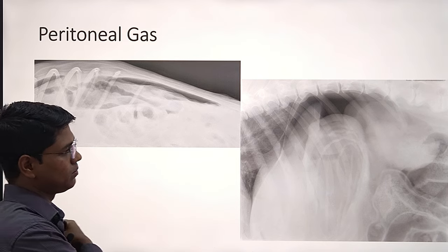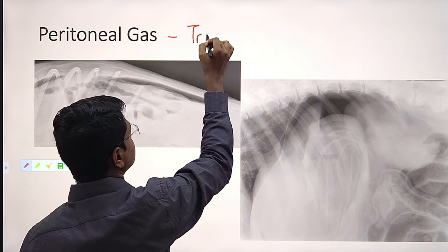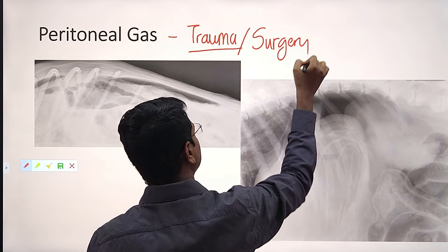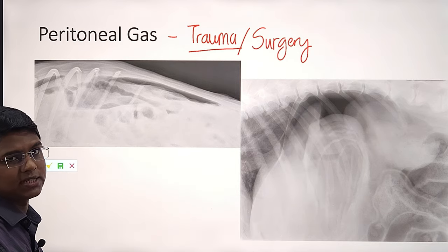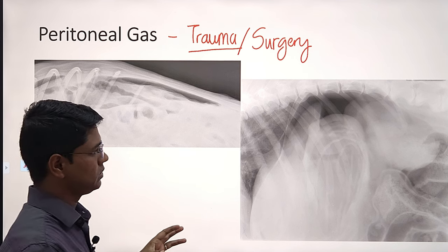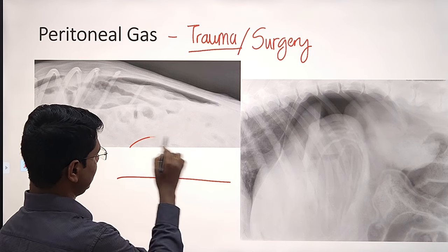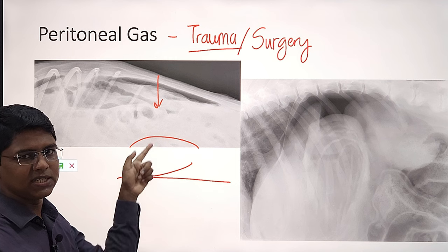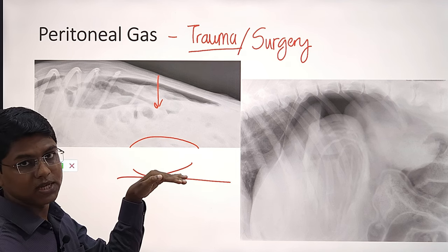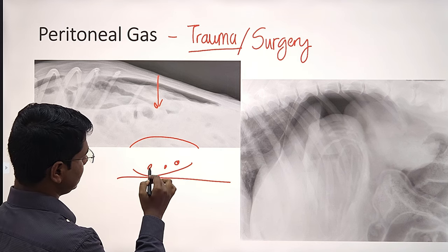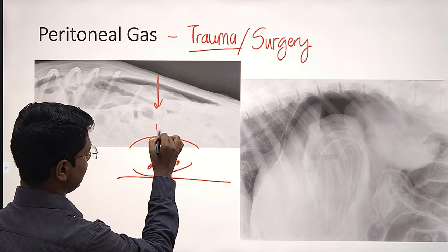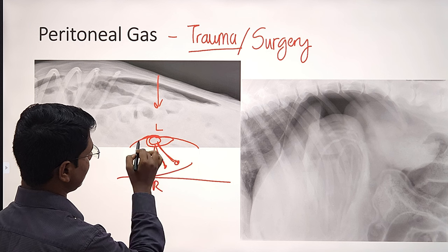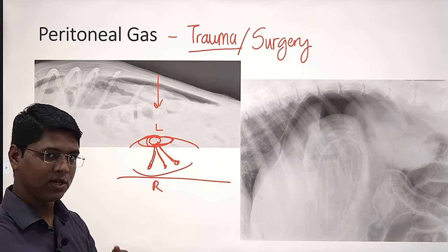Peritoneal gas — the most common cause is trauma: some penetration into the peritoneal cavity or you have done some surgery. For this, there is a specific technique to identify peritoneal gas. Normally, you do a vertical beam x-ray, but for this you need a horizontal x-ray. Whatever gas is present in the peritoneal space will migrate depending on patient positioning. You need a horizontal beam x-ray and the animal should be placed in left lateral recumbency.